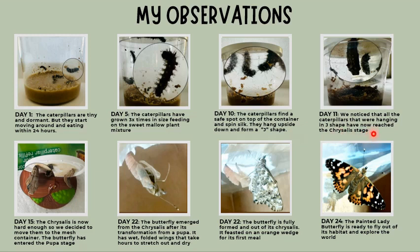Day 11: we notice that the caterpillars have now reached the chrysalis or pupa stage. Day 15: the chrysalis is now hard and we decide to move them to the mesh container. Day 22: the butterfly emerged after its transformation from a pupa. The butterfly is fully formed and out of its chrysalis. It eats an orange.